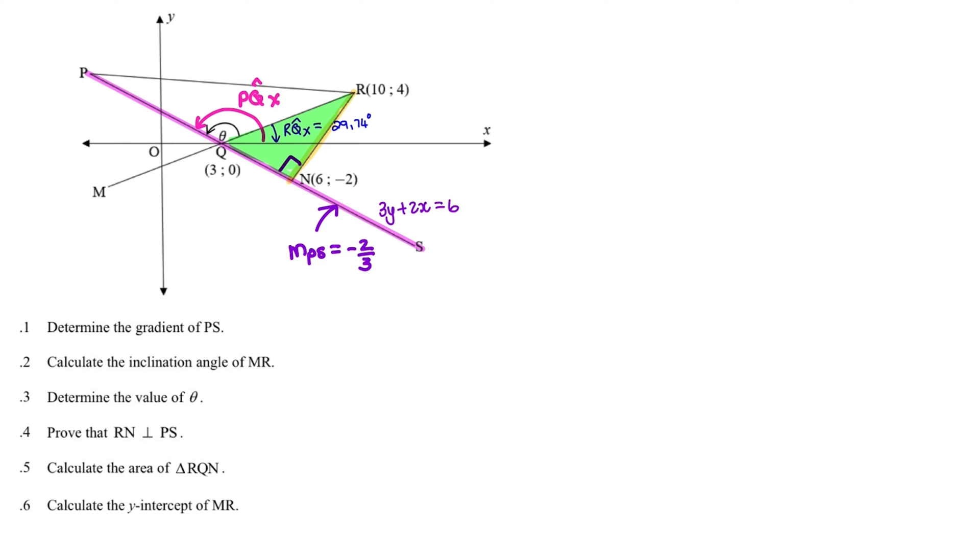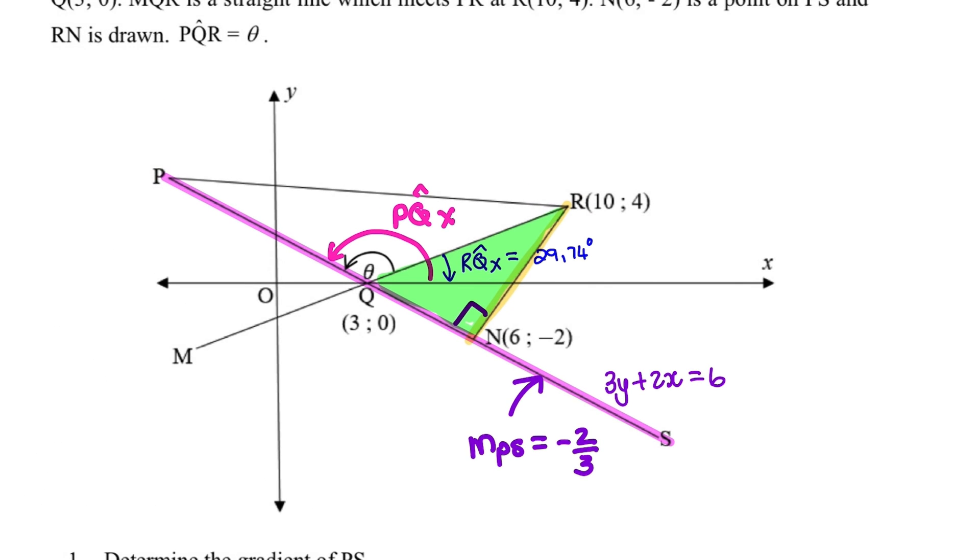And what I notice is that we already have a perpendicular height. So if you inspect the diagram, you can see that this green triangle has a right angle in it. So we can use QN as our base and we can use the length of RN as our height.